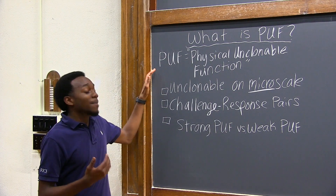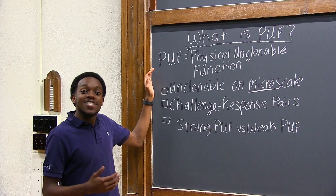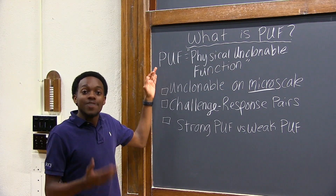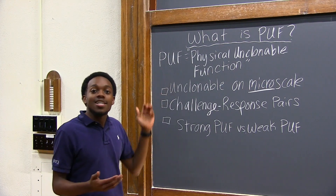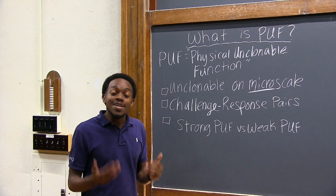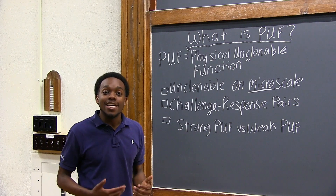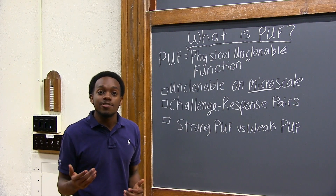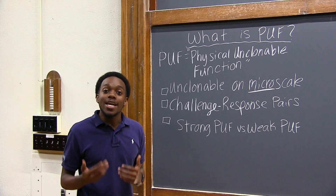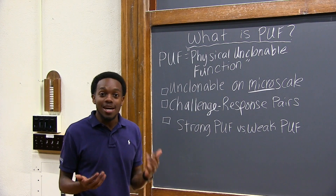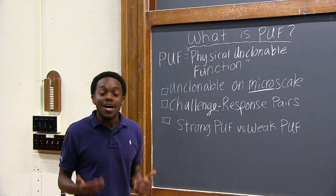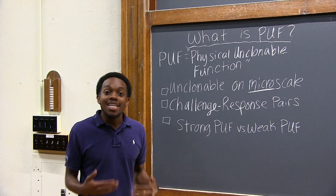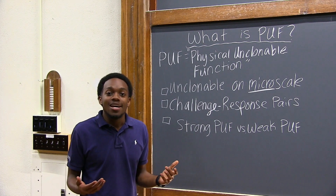A PUF is a physical unclonable function, and it makes use of the variations that were introduced during the manufacturing process of devices. As an example,